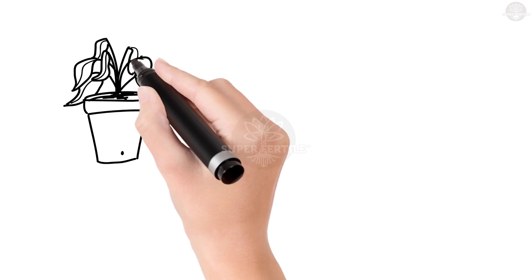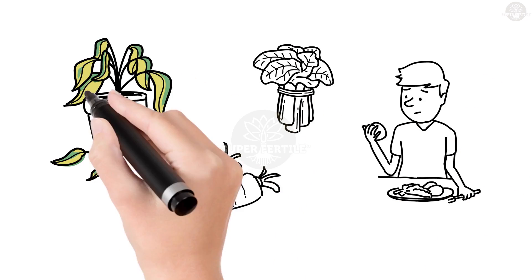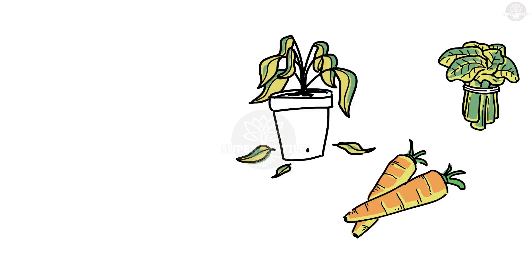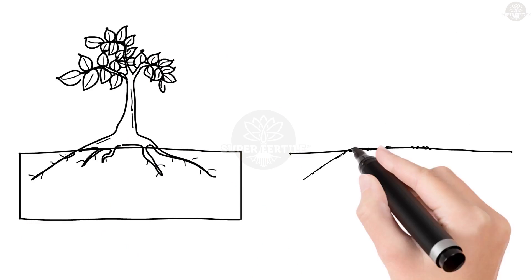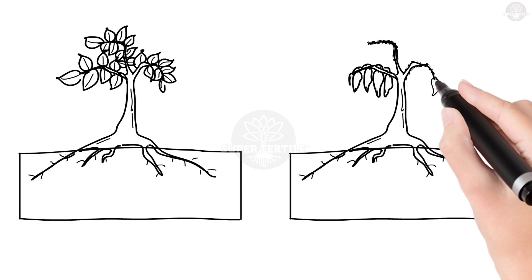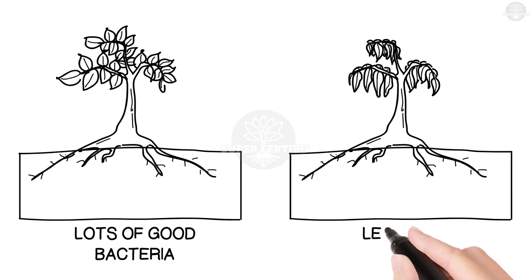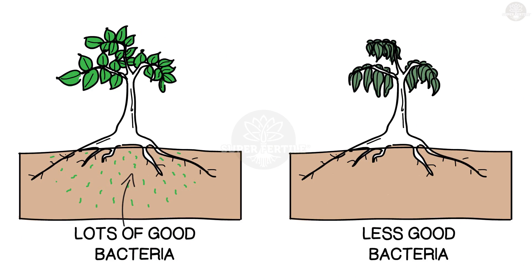Imbalanced pH leads to less healthy plants, lower yields, and less healthy food for us to consume. Bacteria plays a critical role in the soil's ecosystem. Good bacteria breaks down essential nutrients — without these, plants cannot grow healthily.